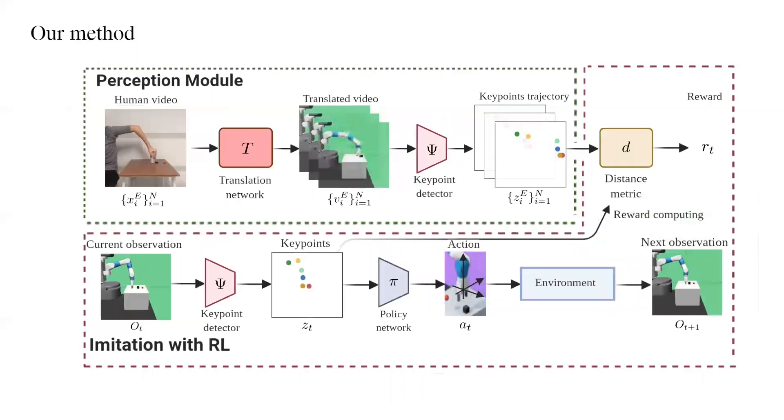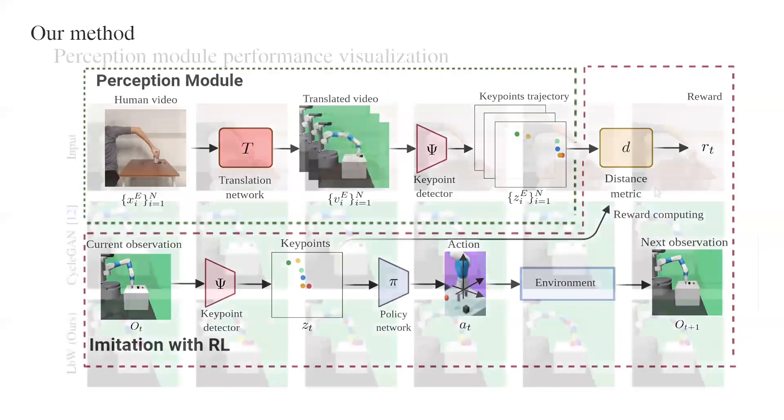Besides the perception module that converts the human video into a keypoint trajectory, our method has another component in which we learn a reward by a distance metric that measures the distance between the keypoint-based representation of the current observation and those in the keypoint trajectory. Then, the keypoint-based representation will be passed to the policy network to predict an action that is used to interact with the environment. We collect the experience data and then apply it to the soft actor-critic algorithm.